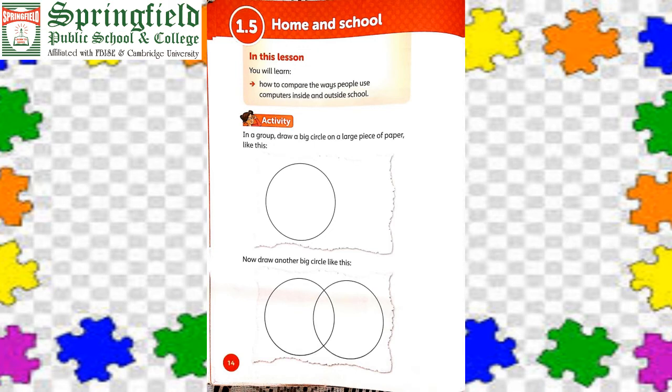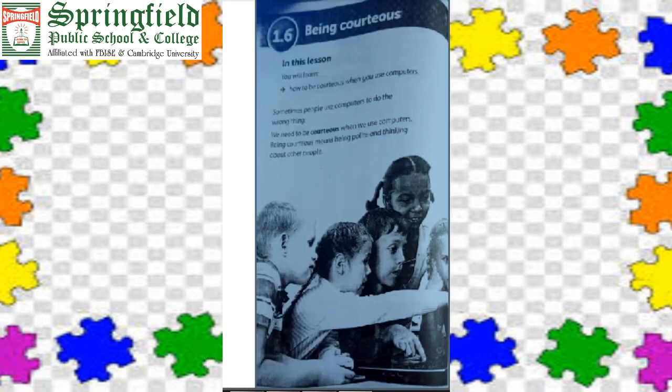Topic 1.6: Being Courteous. How to be courteous when you use a computer. Sometimes people use computers to do the wrong things, so we need to be courteous. Being courteous means being polite and thinking about other people. If someone is waiting for their turn and you have been using the computer for a very long time, please let that person take their turn. And don't use or look through data or folders that don't belong to you — just focus on your own data.